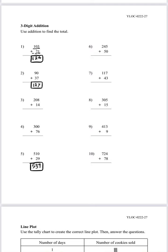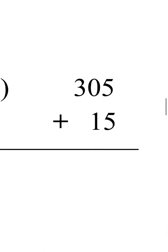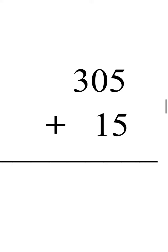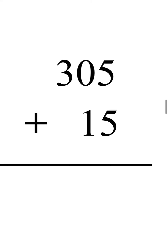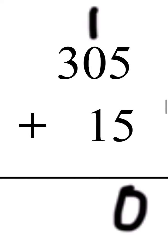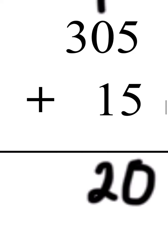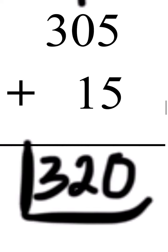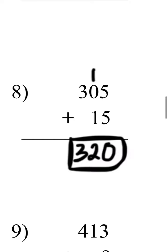Let's move on to number eight. Five plus five is 10, so we write zero on the ones place and carry one to the tens place. One plus zero is one, and one plus one is two. Then three plus zero is three, so 320 is the answer for number eight.